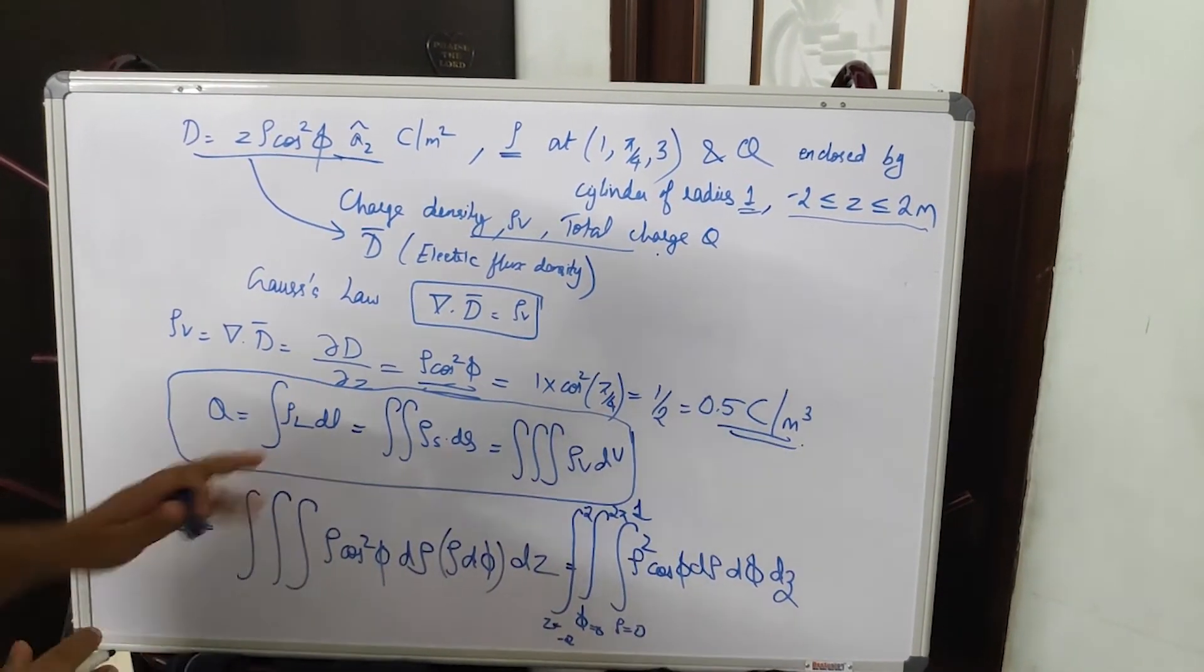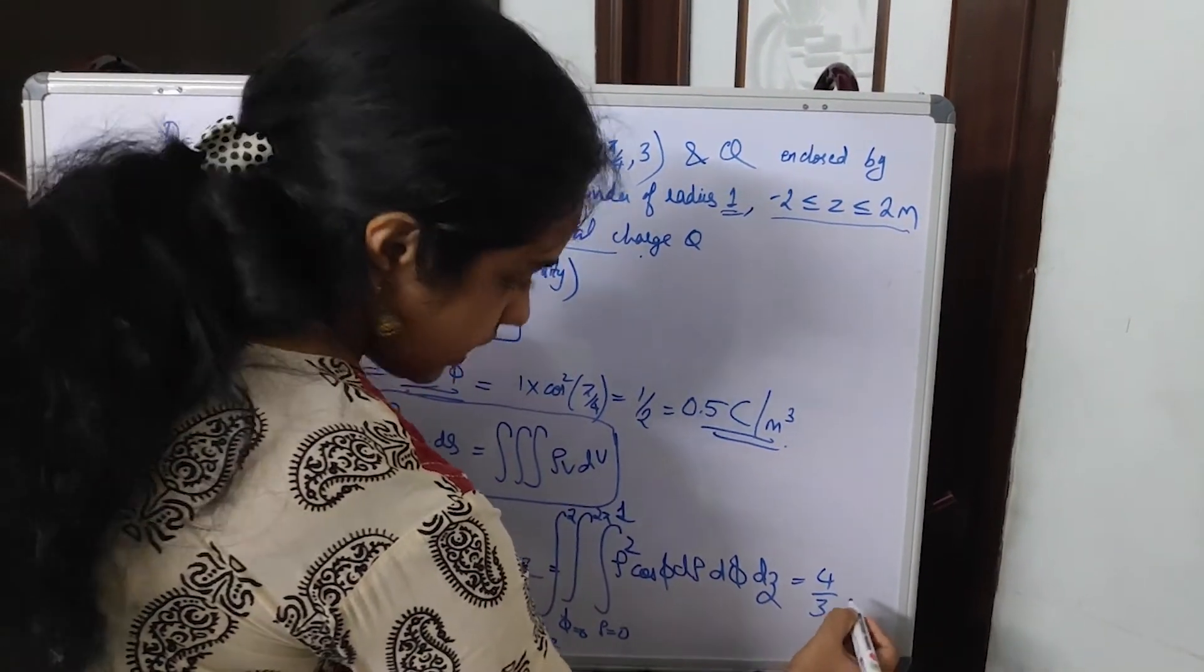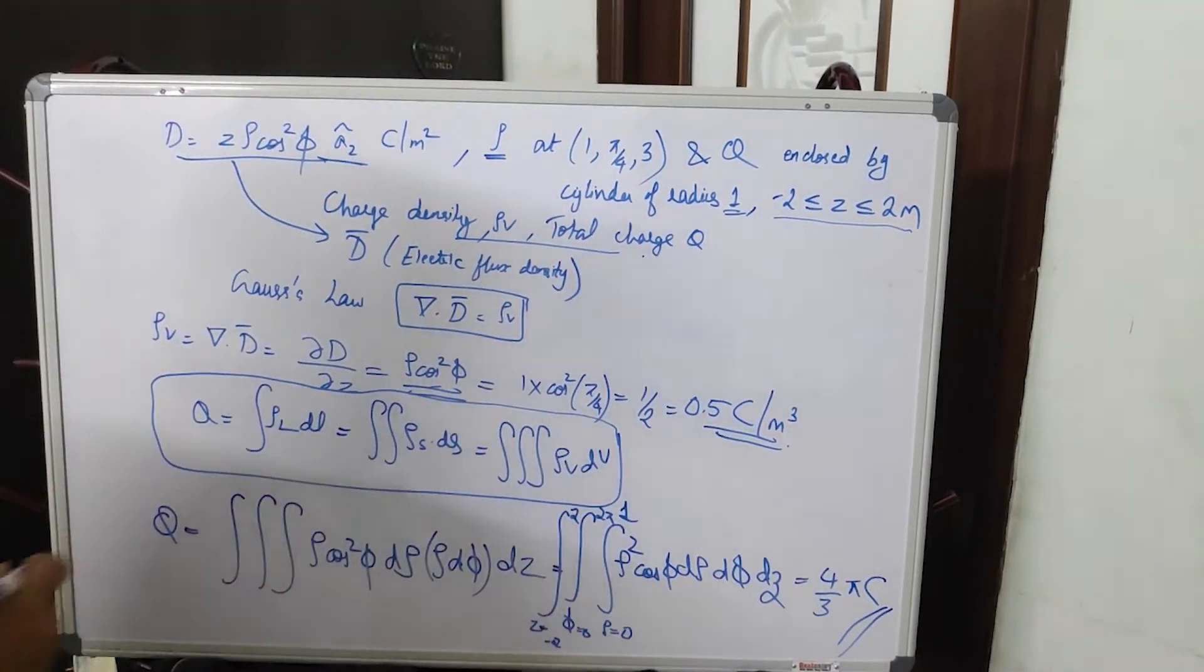The final answer you will get will be 4 by 3 pi coulombs. This will be the final answer.